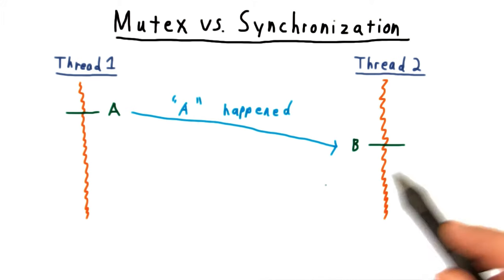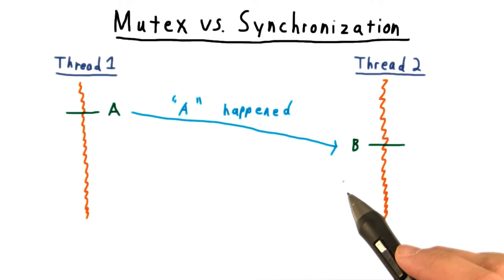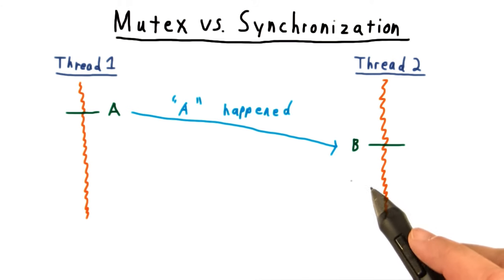Mutual exclusion and synchronization are related, but it is important as a programmer to know which of these goals you are after, so that you can use the right constructs.